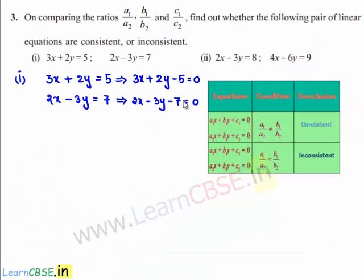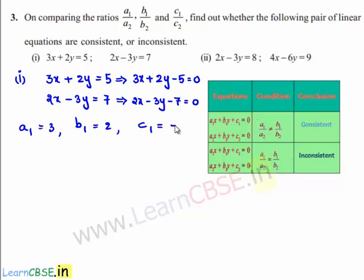Comparing these two equations with the standard equations a1x plus b1y plus c1 is equal to 0 and a2x plus b2y plus c2 is equal to 0, we get a1 is equal to 3, b1 is equal to 2, and c1 is equal to minus 5. Similarly, a2 is equal to 2, b2 is equal to minus 3, and c2 is equal to minus 7.